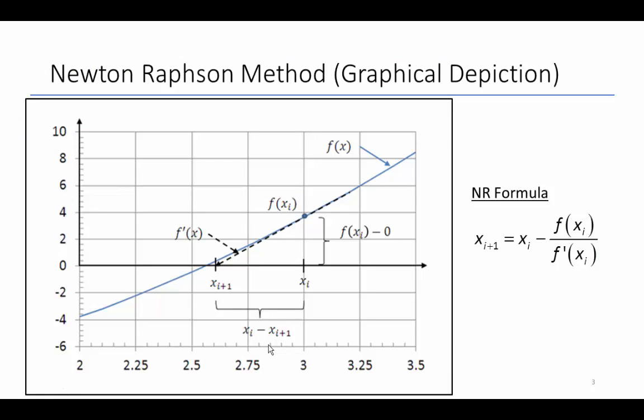The method we're going to talk about is the Newton-Raphson method, one of the most popular open methods. In this graphical depiction, we have some initial value xi, the function at xi, and we need to know the derivative as well. That's the slope through this function point, the derivative of f.